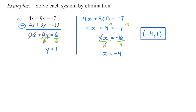Remember you want to always write your solution as an ordered pair, so we need the round brackets — our x coordinate, comma, and our y coordinate. Always verify, even if it doesn't ask you to write it all out — do it mentally. x is negative 4, so 4 times negative 4 is negative 16; 9 times 1 is 9; negative 16 plus 9 is negative 7. And negative 16 plus 3 is negative 13. Make sure on both equations the left side equals the right side.